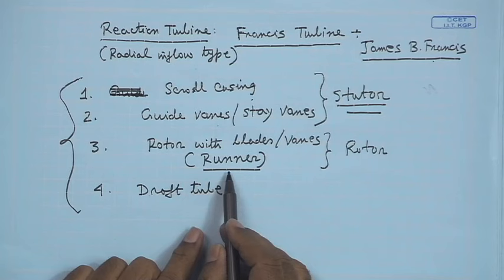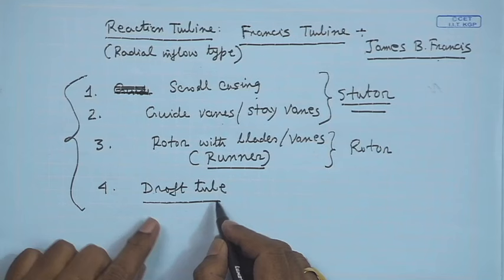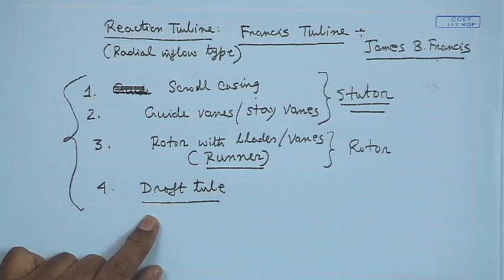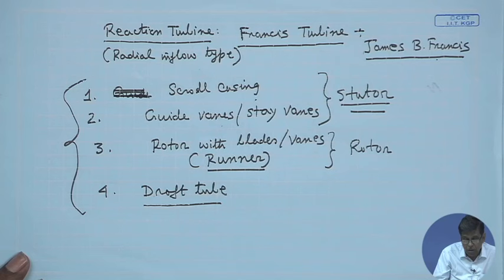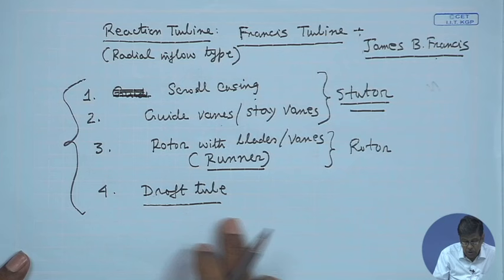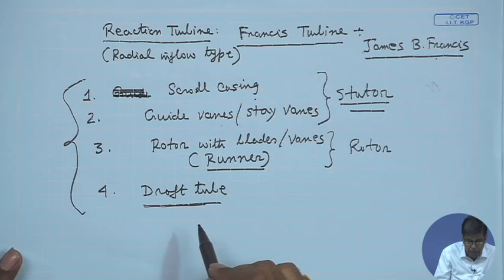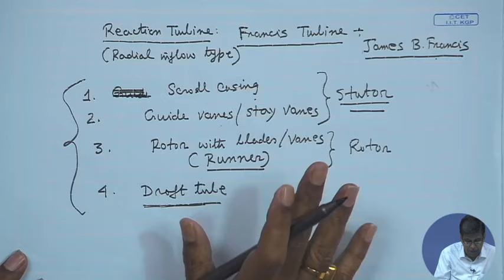At the discharge end of the runner, a fixed tube is attached known as the draft tube, before the water is discharged to the level known as the tail race. The draft tube is attached to the outlet of the runner, through which the water ultimately flows to the sump or discharge level — for example, the river — which we call the tail race. These four main parts constitute a Francis type reaction turbine.